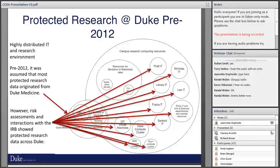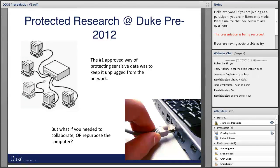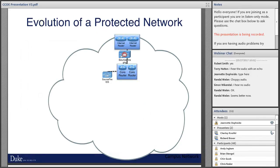But we found that really wasn't the case. When we performed risk assessments of the university, what we found is that sensitive research was going on in just about every area of campus. Especially when you get into social sciences, the key identifier there is the social security number. So prior to 2012, the number one way of dealing with sensitive data was keeping it unplugged from the network. The question then was: what if your collaborators were outside of Duke, or you had postdocs or researchers on campus trying to work with the data?